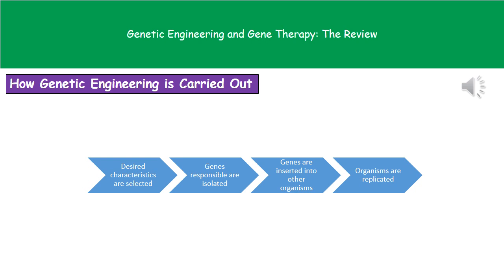In terms of how we actually carry out genetic engineering, we've got a little flowchart here to help you remember the stages. First, we're going to select our desired characteristic. Then we're going to isolate the responsible genes. Then we take those genes and insert them into other organisms. And finally, we replicate those organisms so we've got many copies of it.